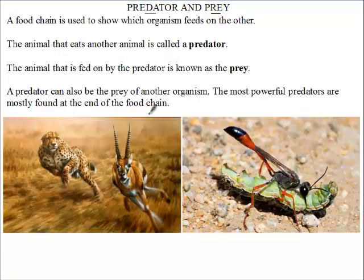The most powerful predators are mostly found at the end of the food chain. For example, a lion — not many organisms can kill a lion and feed on it, so lions are usually at the end of a food chain.